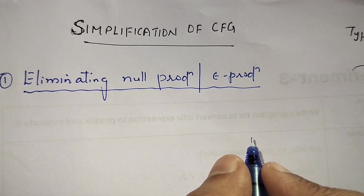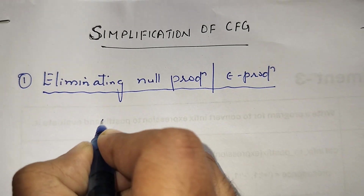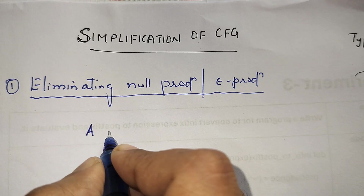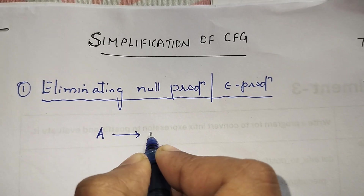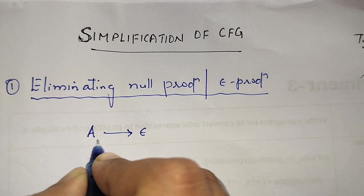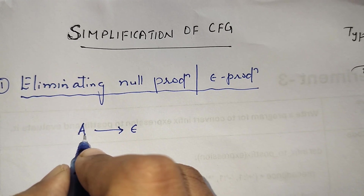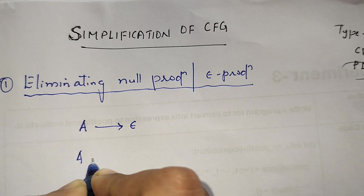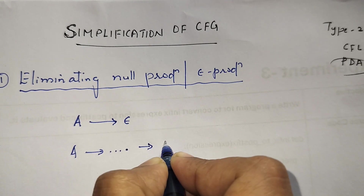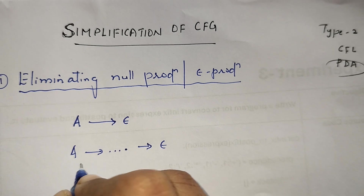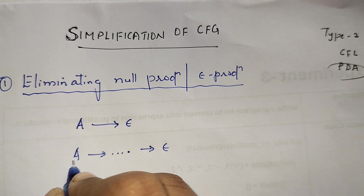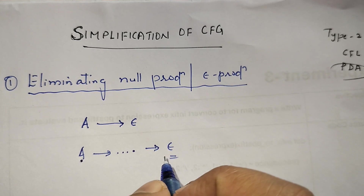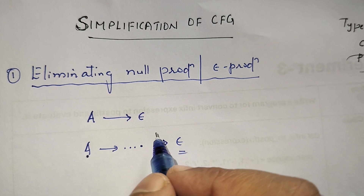In a context free grammar, a non-terminal symbol is called a nullable variable if there is a production of the form A → ε (a null production), or if there is a derivation that starts from A and eventually leads to epsilon.